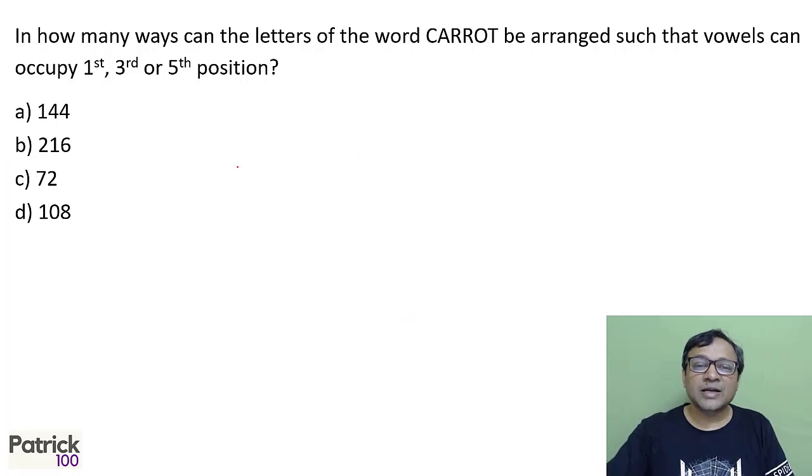In how many ways can the word CARET be arranged such that vowels occupy 1st, 3rd and 5th position? So 1st, 3rd or 5th. So 2 vowels to be arranged in these places. So 3P2 ways. This is 3 into 2, 6 ways. So 1st vowel can occupy 3 places, 2nd vowel can occupy 2 places.